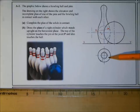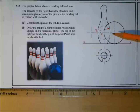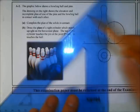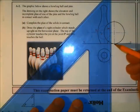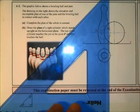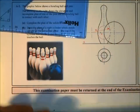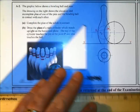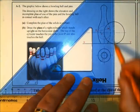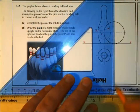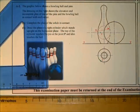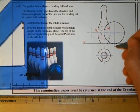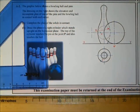For Part A, we need to complete the plan of the solids in contact. We have the plan of the pin, and now we need the plan of the bowling ball. First, since the elevation is completed, the center of the bowling ball will be directly below where the center is in elevation — we need our XY line set up correctly. That gives us a vertical line, but we need to find exactly where on that line.